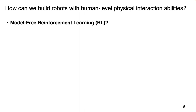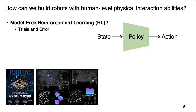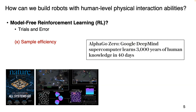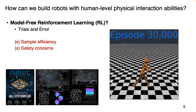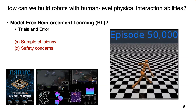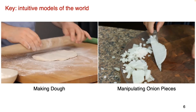One way people typically consider is model-free reinforcement learning, which learns a policy mapping from state to action through trial and error with the environment. We have witnessed success stories in the gaming domain like AlphaGo and AlphaStar. However, when deployed in the real world for physical interactions, we encounter problems like sample efficiency — AlphaGo Zero requires 3,000 years of interactions — as well as safety concerns. This is also not how humans do tasks; we do not need tens of millions of interactions before we can do every single task.